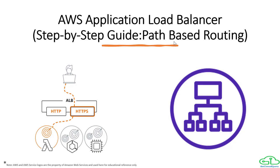AWS Application Load Balancer is a part of Elastic Load Balancing of AWS services. We have another video where we have spoken at length on Elastic Load Balancing as well as on Classic Load Balancer. It is basically a very powerful service which will help you distribute incoming traffic to multiple targets — those targets could be your EC2 instances, containers, or IP addresses. This AWS Application Load Balancer works on Layer 7 of the OSI model, so it is an appropriate fit for workloads where HTTP, HTTPS, and gRPC protocols are used.